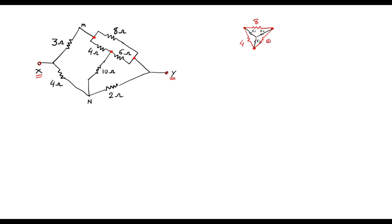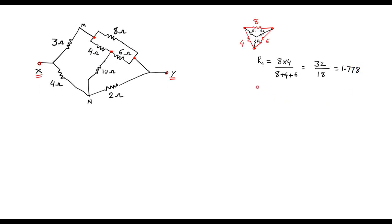To convert delta into star, the formula is: R1 equals the product of adjacent resistors divided by the sum of all resistors. Adjacent to R1 are 8Ω and 4Ω, so R1 = (8 × 4) / (8 + 4 + 6) = 32 / 18 = 1.778Ω.